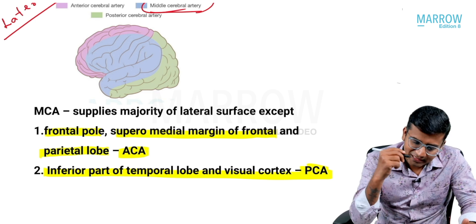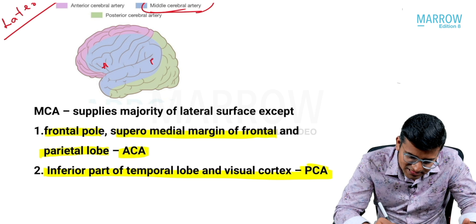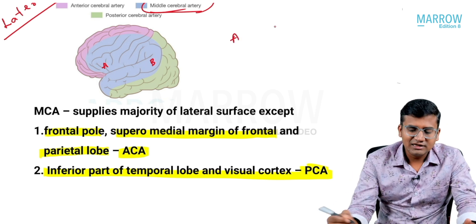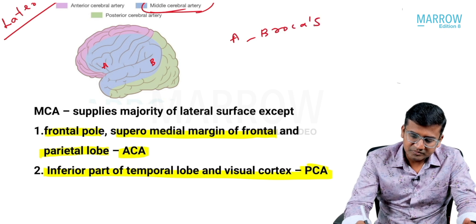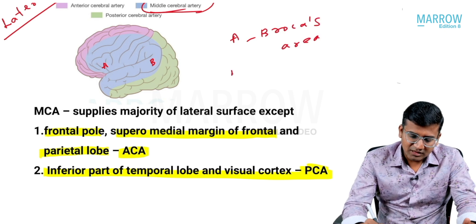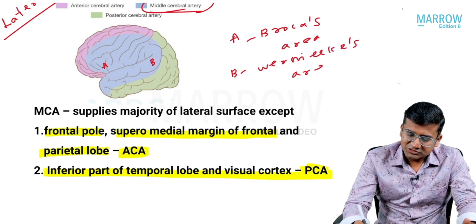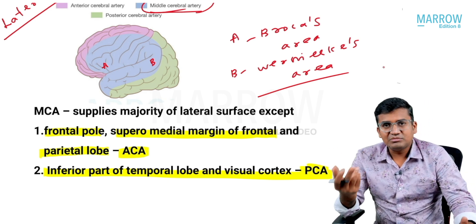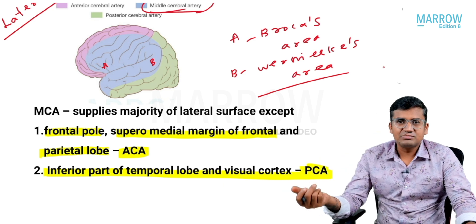I am going to mark two specific areas — A and B. Area A is Broca's area and area B is Wernicke's area. Both Wernicke's area and Broca's area are supplied by the middle cerebral artery. Therefore, Wernicke's aphasia and Broca's aphasia are due to involvement of the middle cerebral artery.